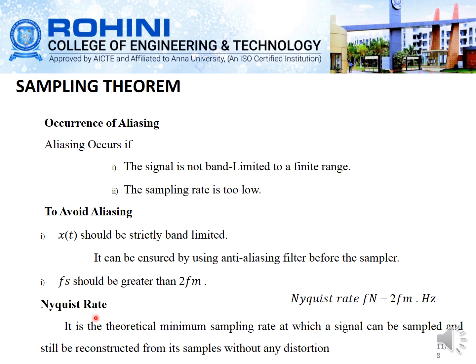Next is the Nyquist rate. The Nyquist rate is defined as fs_Nyquist equal to 2·fm. It is the theoretical minimum sampling rate at which a signal can be sampled and still be reconstructed from its samples without any distortion.